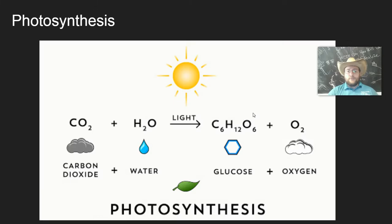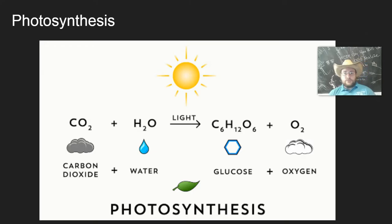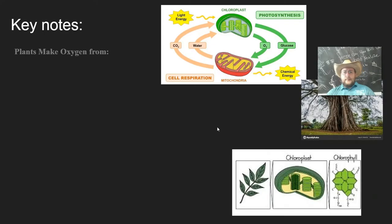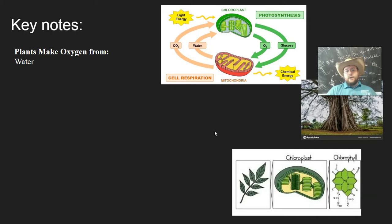Speaking of photosynthesis, objective two focuses on that — the process of using the energy of sunlight to power the trapping of carbon dioxide from the atmosphere in order to build molecules such as sugar. In the same process, it also breaks down water to make oxygen, which is very convenient because it produces oxygen for our atmosphere, which other organisms use for cell respiration.